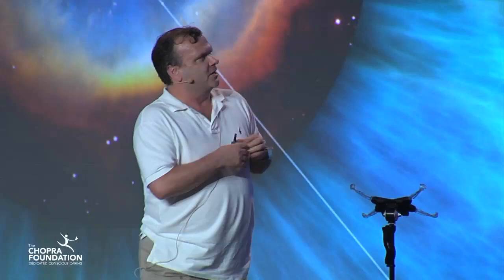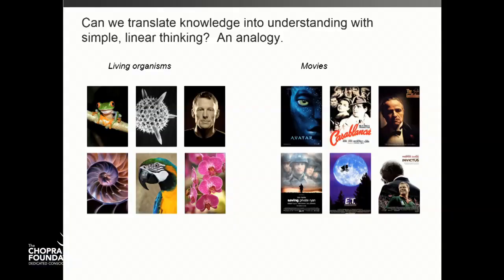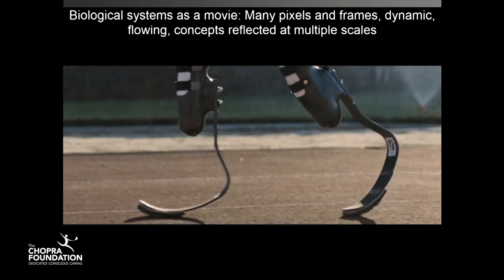I wanted to talk today about how do we understand living systems — how are we going to achieve understanding of the complexity of life when you look at the diversity of life before us and the strings of DNA that define whether you're going to become a frog or a human, just by variations in the letters. How do we understand that vast complexity and what defines how we behave, how we interact with others, how flowers bloom and so on.